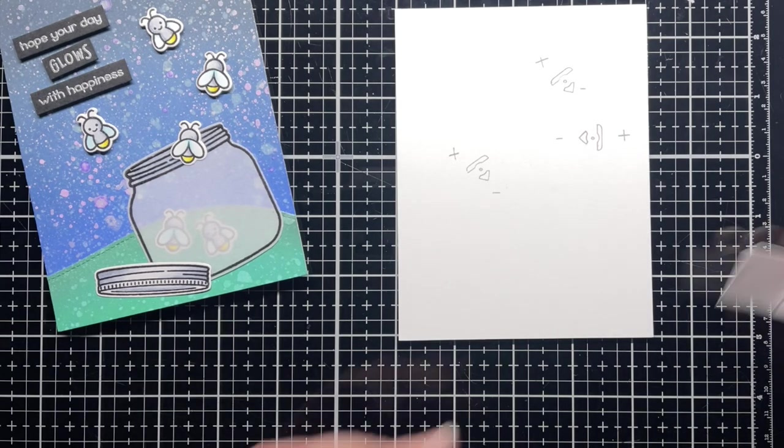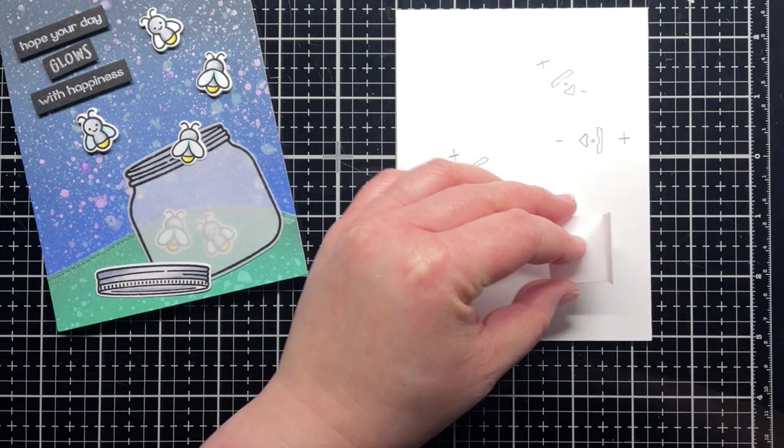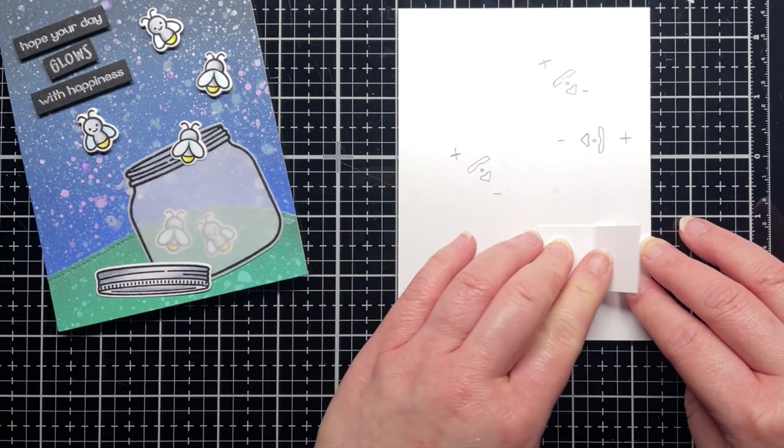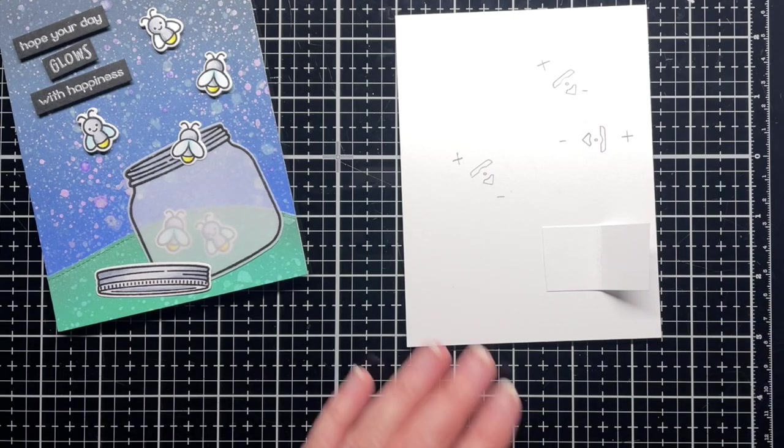Then I take a small piece of cardstock, approximately 1 inch by 2 inches, and score it in the middle. I add adhesive to the back of the left side and adhere that to the circuit panel so the fold is on the right side.